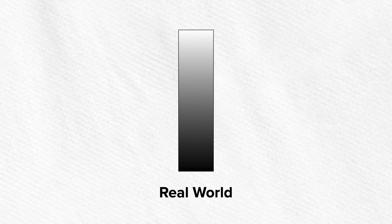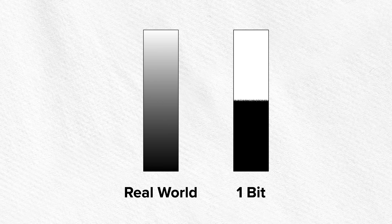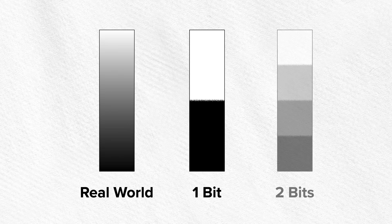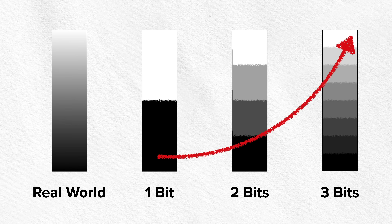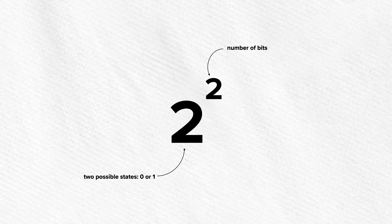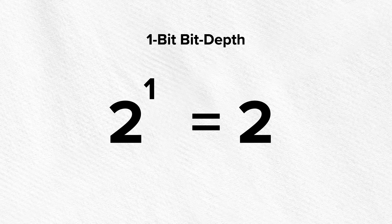Let's imagine we want to capture a black and white gradient from the real world, but our camera has just a few bits available. Starting with one bit: one bit can represent two values — 0 and 1 — which means just black and white. With two bits we get four shades of gray, and with three bits we get eight shades of gray. As you can see, the number of shades increases exponentially with the bits available, because the number of bits is used as the exponent. So 2 to the power of 1 makes two shades, and indeed that black and white gradient from the real world became just a black blob and a white blob.